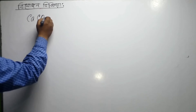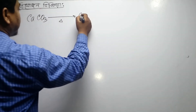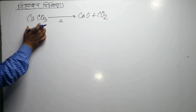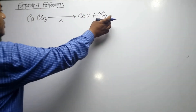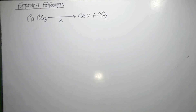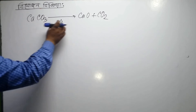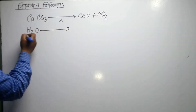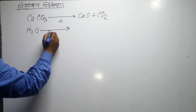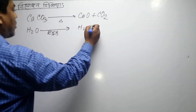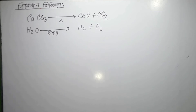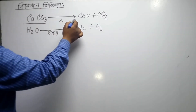If calcium carbonate is added to calcium oxide and carbon dioxide, it will be added to calcium oxide and carbon dioxide. So, it will be added to calcium oxide and carbon dioxide.